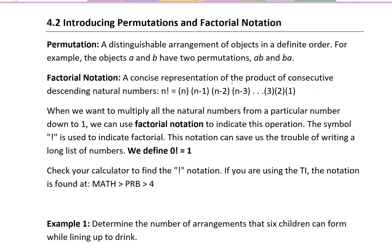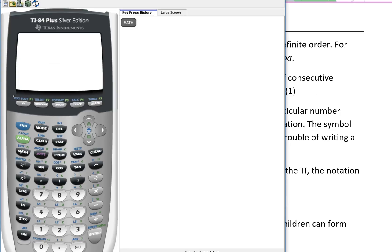When we want to multiply all the natural numbers from a particular number down to 1, we can use factorial notation to indicate this operation. The symbol is an exclamation mark. This notation can save us the trouble of writing a long list of numbers. In your graphing calculator, you can find the factorial notation. If we go to math and then go over to PRB, which is your probability menu, you can see number 4, the factorial.